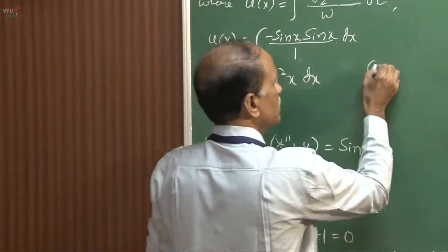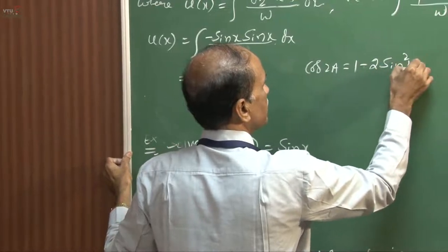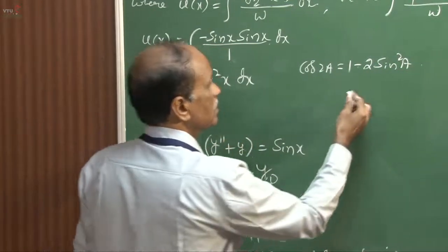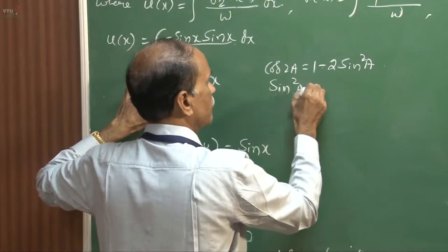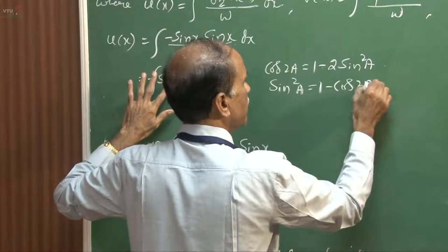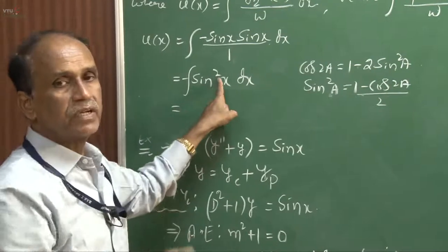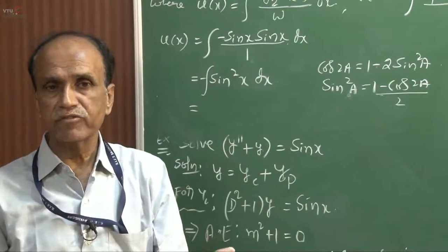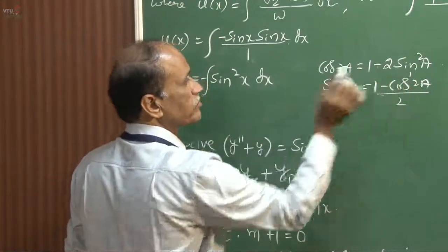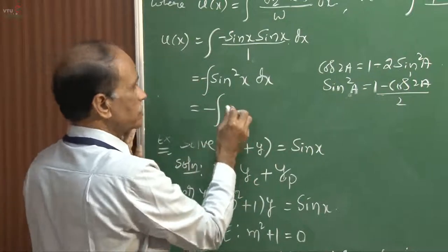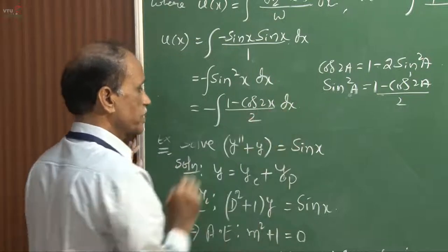To integrate sin squared x, we use the formula cos 2a equals 1 minus 2 sin squared a, so sin squared a equals 1 minus cos 2a divided by 2. Substituting x in place of a — since we have no ready formula to directly integrate second degree terms — we convert to first degree. Therefore, ux equals the integration of minus of 1 minus cos 2x divided by 2, with respect to x.